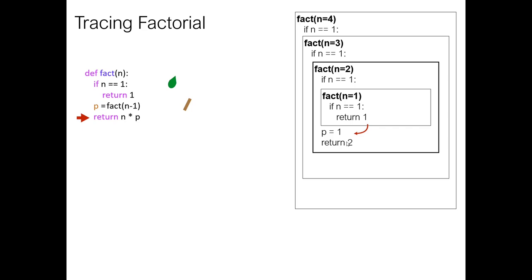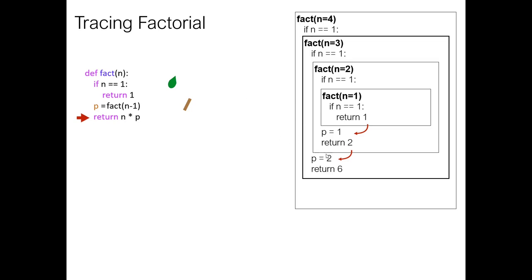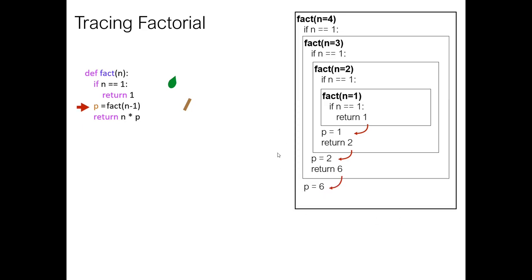We store one in p — but this is the n-equals-two invocation, so we compute two times one and return two. That gets stored in p in the n-equals-three invocation. Next line that runs is return three times two, which is six. That six gets stored in p in the outermost factorial where n equals four. And then last thing: four times six is 24. That goes back to whoever called this function.